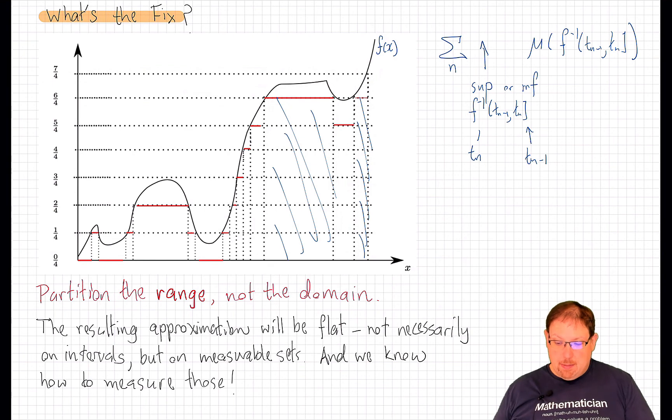Now that supremum or infimum is just going to be t_n or t_{n-1}. And so we'll have a sum similar to a Riemann sum that we can take a limit of as the distance between the t_n's goes to 0.